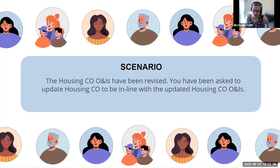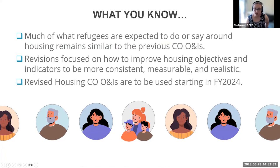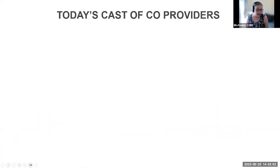What you know in this scenario is that much of what refugees are expected to do or say around housing remains similar to the previous CO ONIs. The revisions focus on how to improve housing objectives and indicators to be more consistent, measurable, and realistic. The revised housing ONIs are to be used starting in fiscal year 2024. This is the scenario we are all in right now — we're just focusing in on the housing ONIs.